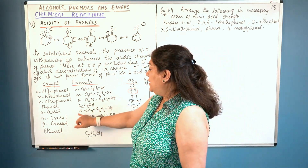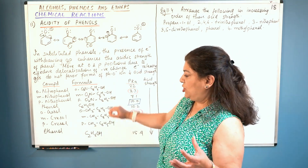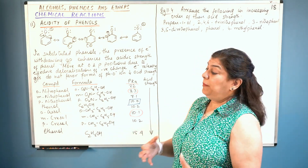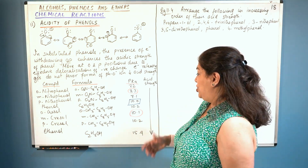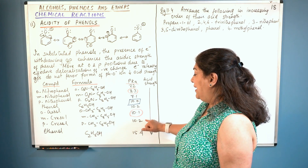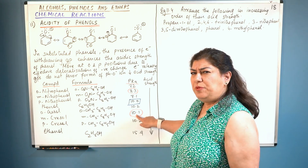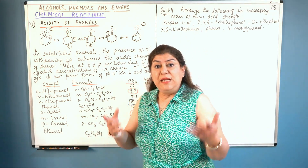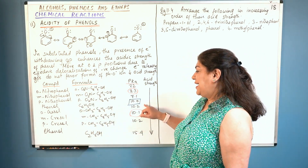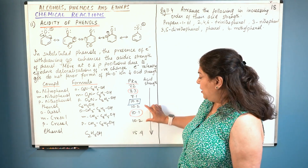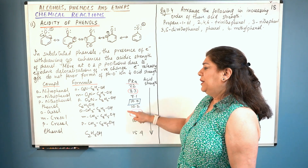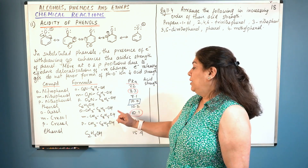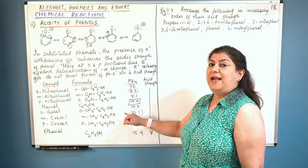Then comes cresol, which has a methyl group at ortho, meta, and para positions. Methyl group is electron releasing — it pushes electrons away. If it is at ortho and para positions the pKa value is 10.2, but if at the meta position the electrons don't even need to come to that spot — so it doesn't affect as much. But at the meta position it still pushes electrons away slightly. The methyl group is a deactivating group, so ortho-, meta-, and para-cresols are all less acidic than phenol.